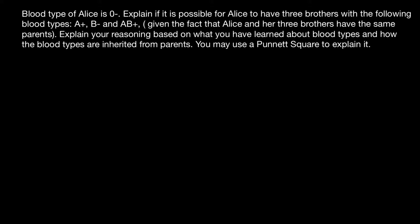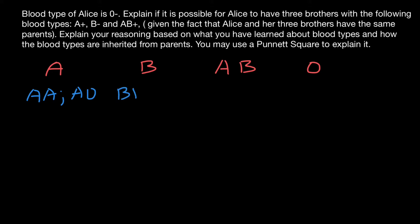As you know, there are four blood groups: blood group A, blood group B, blood group AB, and blood group O. Blood group A is made by two genotypes: A-A and A-O. Blood group B is also made by two genotypes: B-B and B-O. Blood group AB is made by only one genotype, A-B, and blood group O is made by one genotype, O-O. So we have four blood groups which are made by six genotypes.